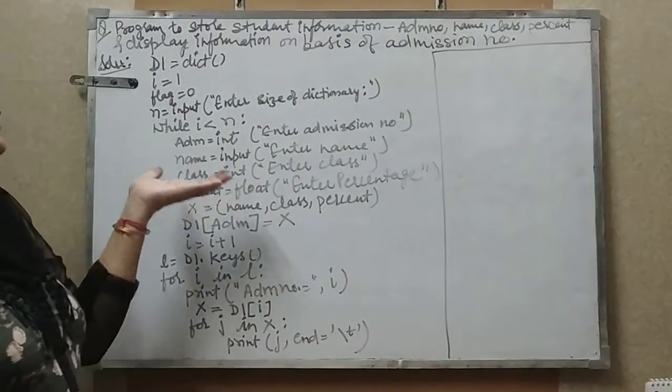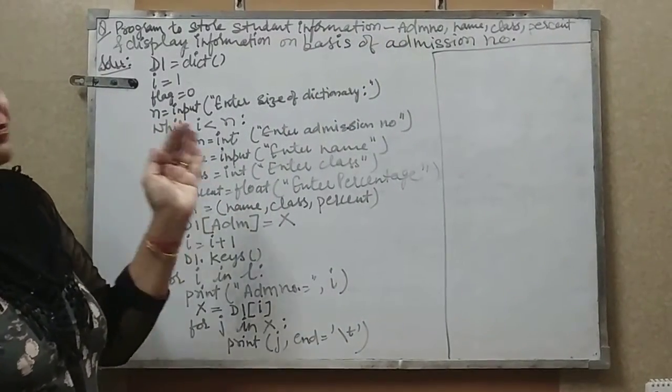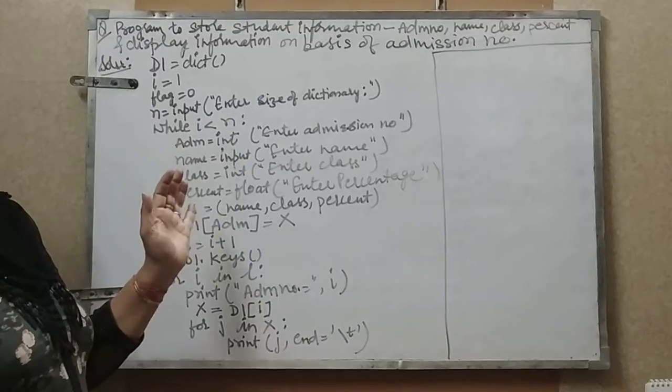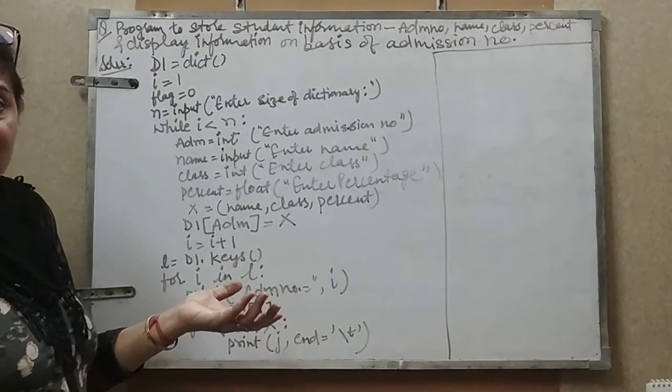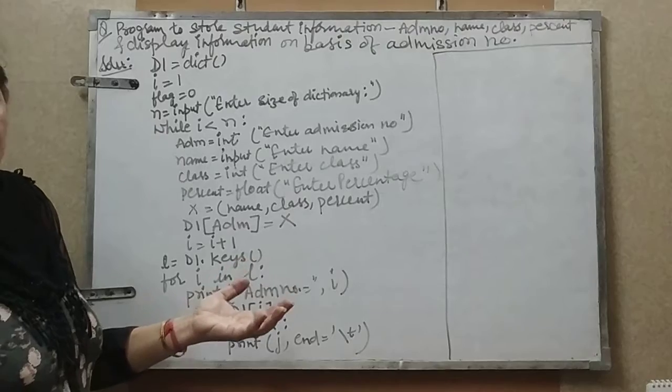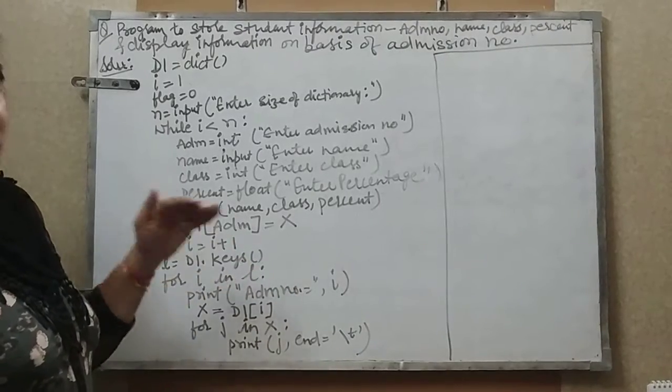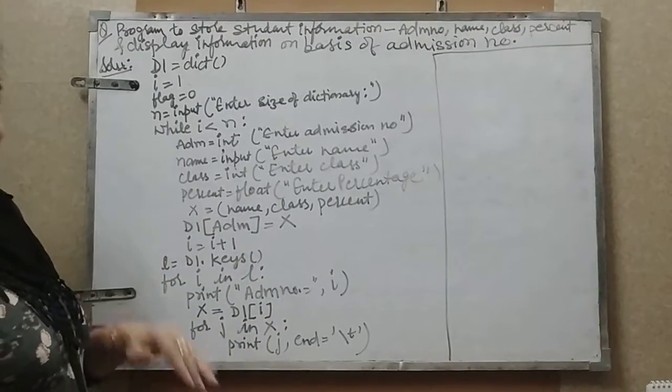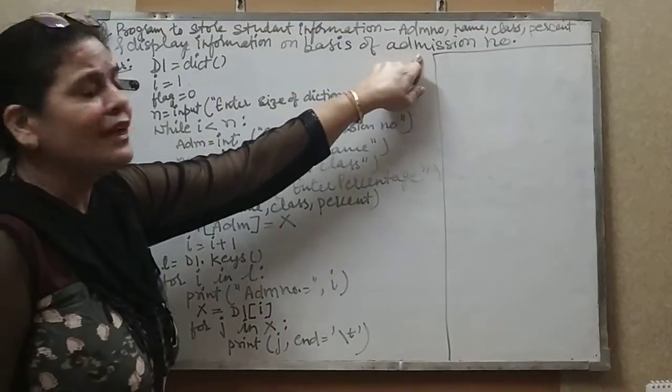If I have a child's admission number and other information like name, class, percentage, I have to find the number of students' admission numbers. But I have to access or display the information on the basis of the admission number.